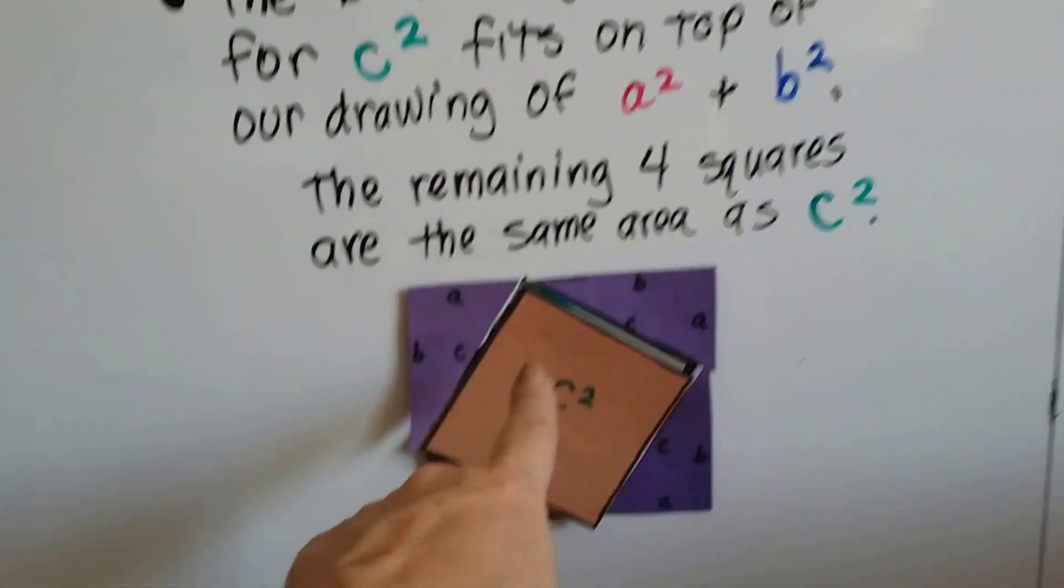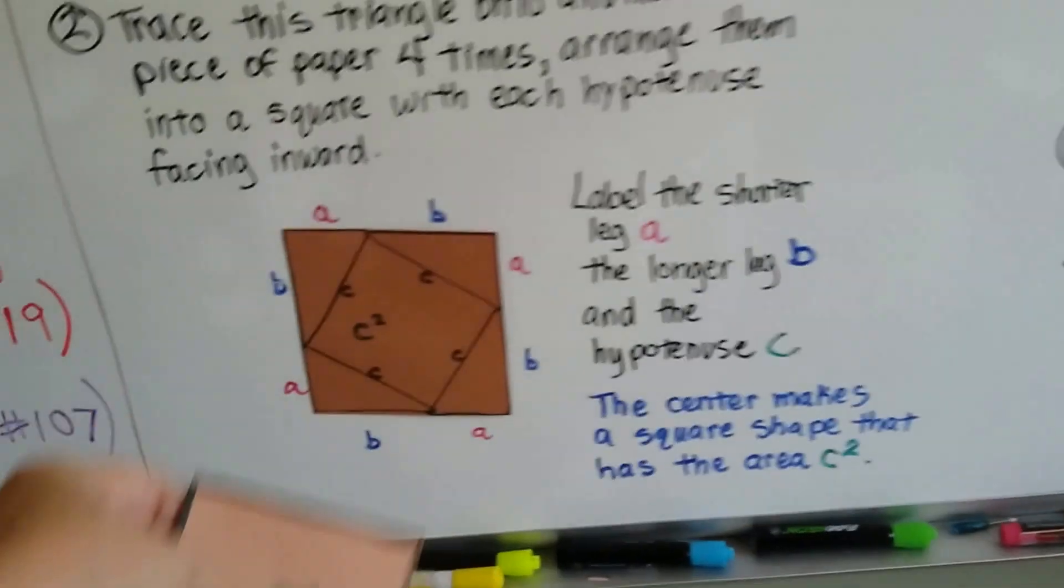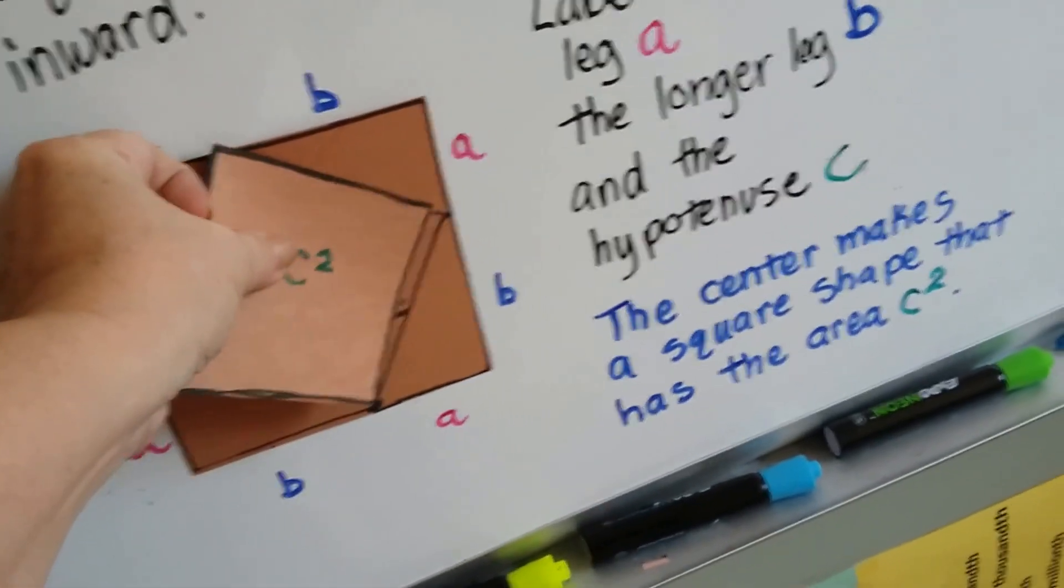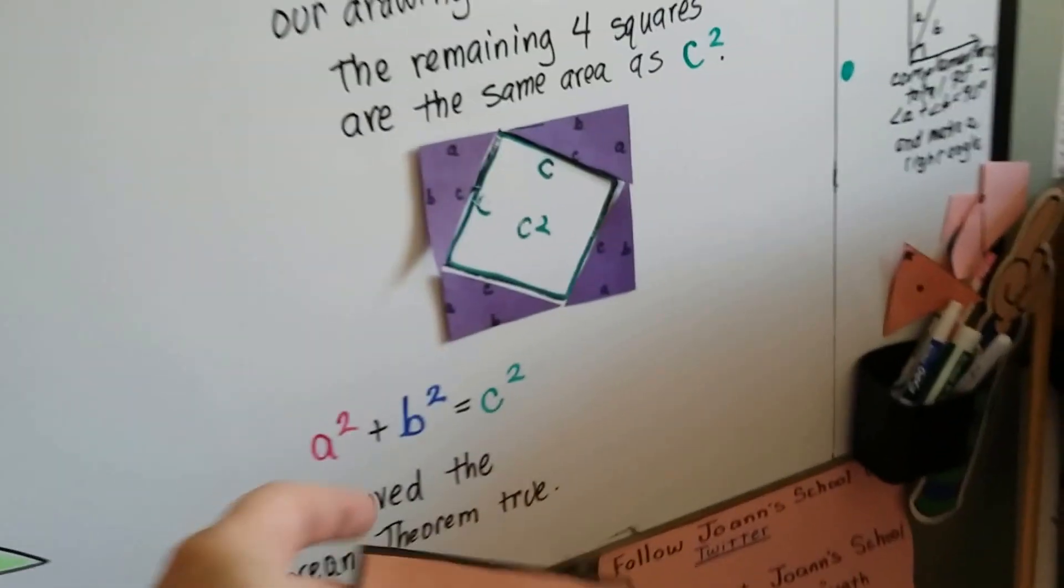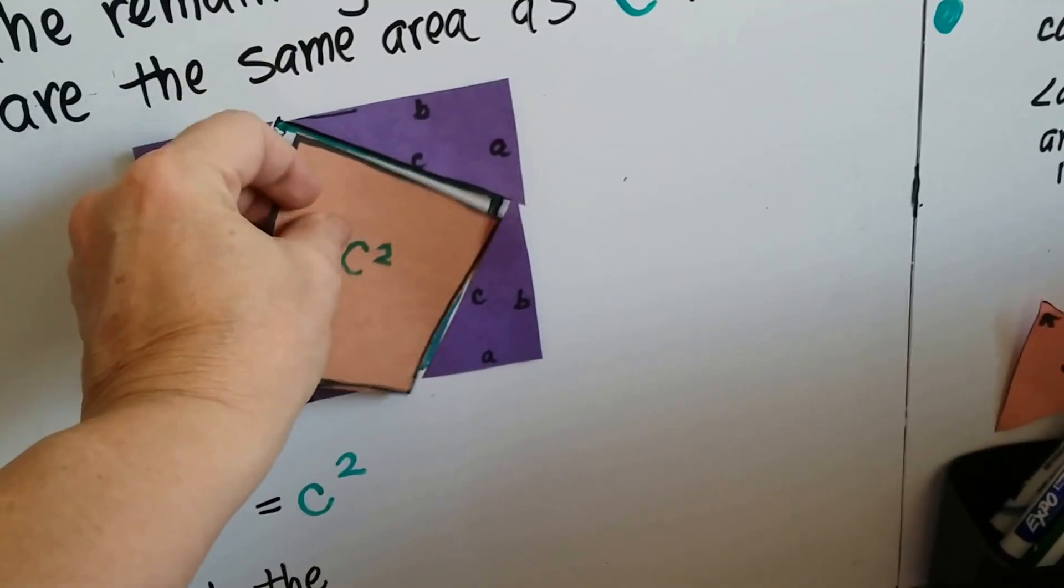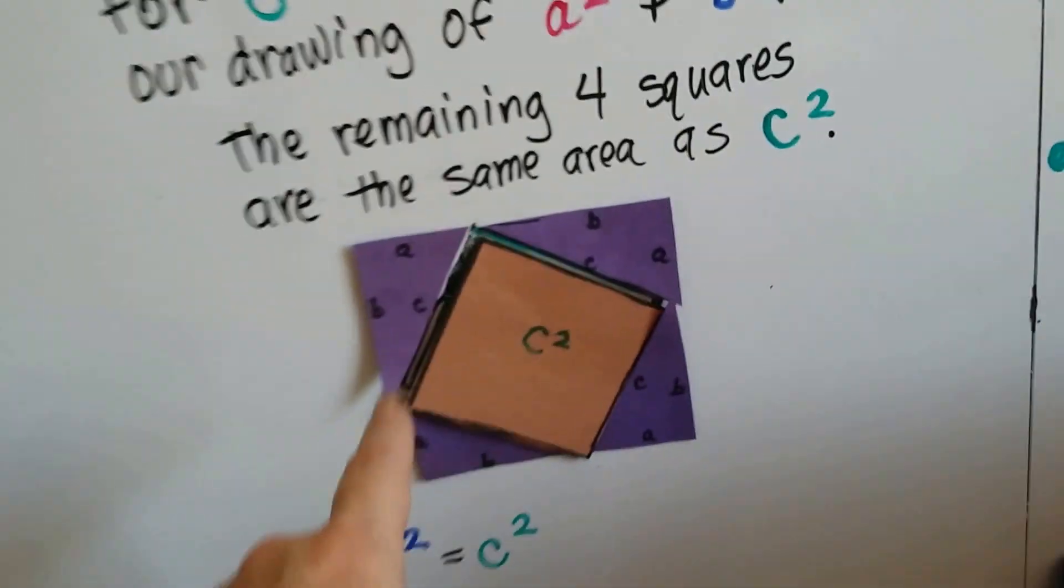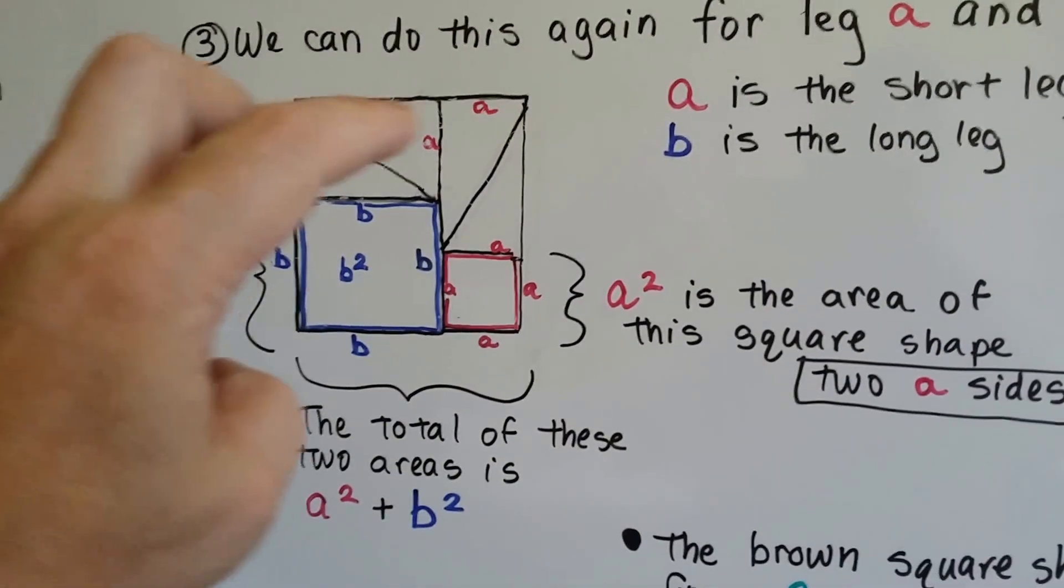The brown square shape right here actually fits right on top of this one. It's the same size. We've got our shapes. We've got our C squared. And we could take each one of these little triangles. We've got one, two, three, four triangles. And we could lay them here. One, two, three, four.